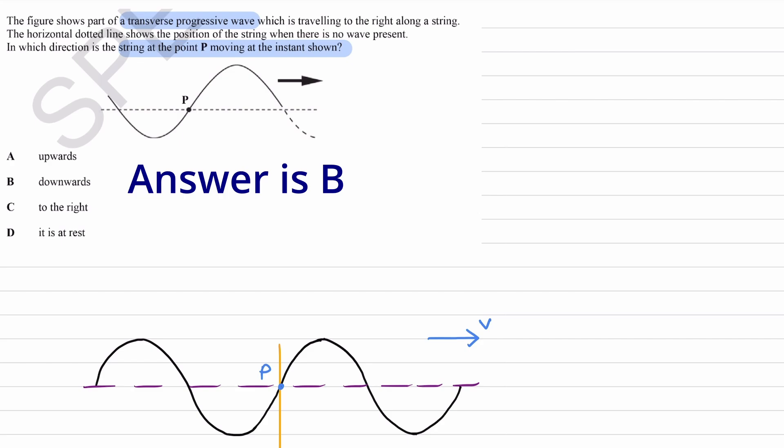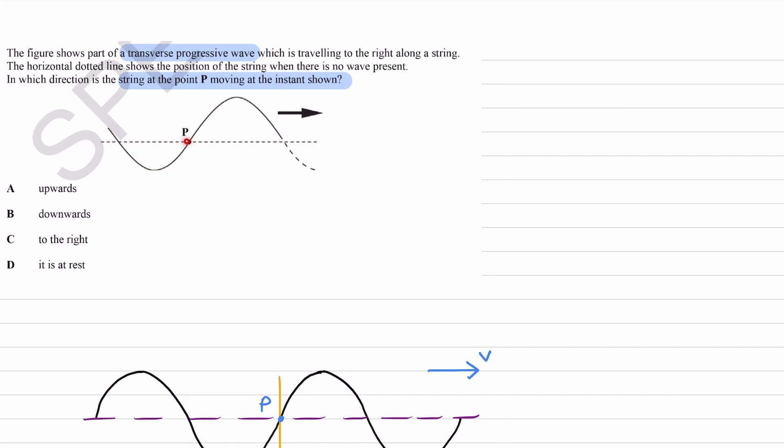How I like to visualise this: imagine this is like a rigid metal wire that's been bent in this shape, and it's moving towards the right. Point P is like a little ring or bead that's on this metal wire. As the metal wire moves towards the right, as this trough moves towards the right, this bead that's stuck along that metal wire will move down as this trough goes just beneath that point.